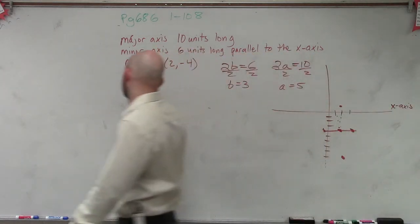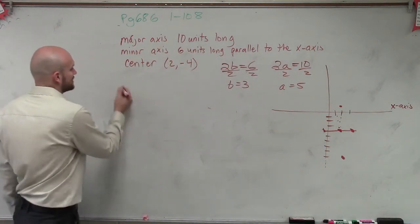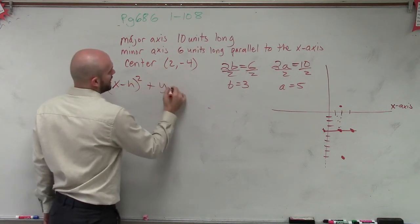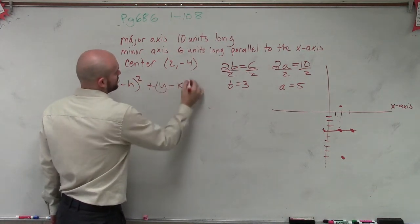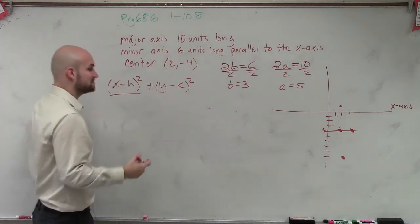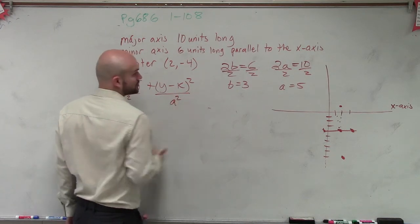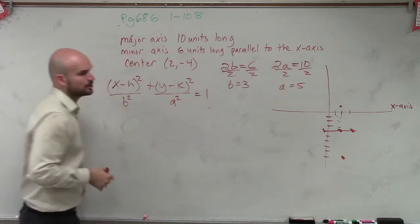So again, unfortunately, we're going to be using the same formula that we used last problem. So it's x minus h squared plus y minus k squared. And then since my major axis is vertical, my b squared goes over my x and my a squared goes over my y. And we set it equal to 1.